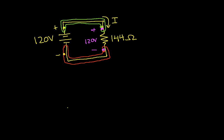Okay, so I want to find the current. Well, according to Ohm's law, the current is the voltage across the resistor divided by the resistance. We've just said that the voltage across the resistor is 120 volts. That's this value right here. The resistance is 144 ohms.